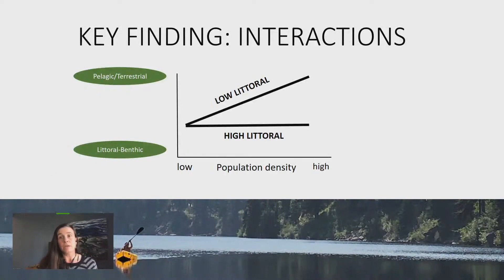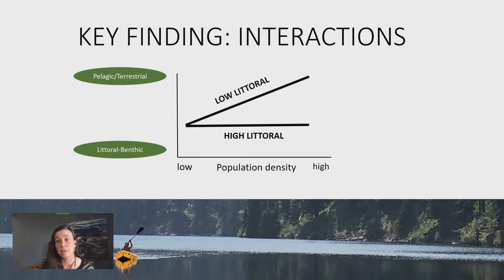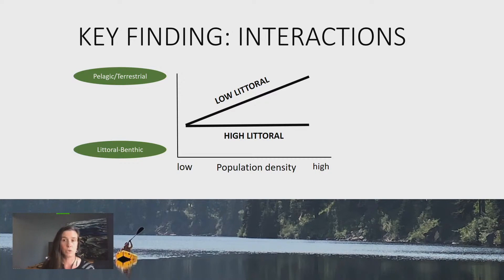Our study demonstrates that interactions between littoral habitat availability and population abundance influence how rainbow trout utilize basal resource pathways. Resource use was relatively consistent among littoral, pelagic, and terrestrial resources regardless of littoral habitat availability at low population abundance. However, as abundance increased — leading to presumed intraspecific competition — in lakes with low littoral extent, habitat structure became more influential, shifting resource use towards terrestrial and pelagic resources. These results suggest the heightened importance of biotic factors such as fish community abundance as a determinant of resource use when littoral habitat is more limited.